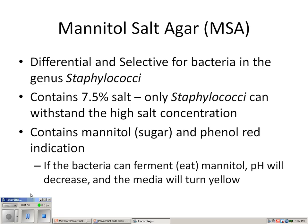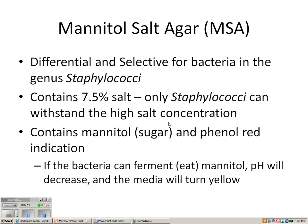MSA has a familiar pH indicator called phenol red. Therefore, the phenol red in the MSA makes the plate red. If there is sugar use, just like we saw in the phenol red broth, the red media will lose some of its color and turn yellow due to a decrease in pH.